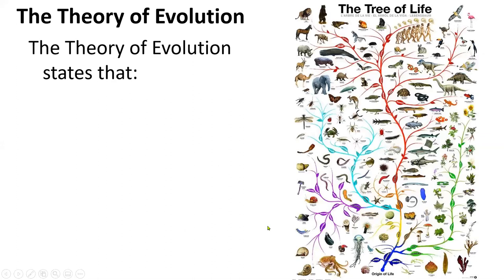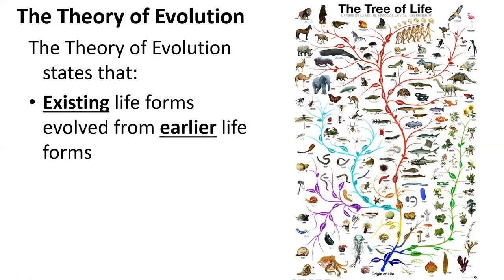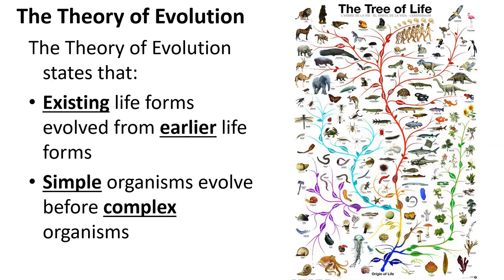This picture shows a version of the tree of life that obviously does not have every single species, but it does depict the fact that life has gone from simple to complex. That's one of the main ideas of evolution — that existing life forms today must have come from earlier life forms because there's change over time, and that simple organisms evolved first before more complex organisms.